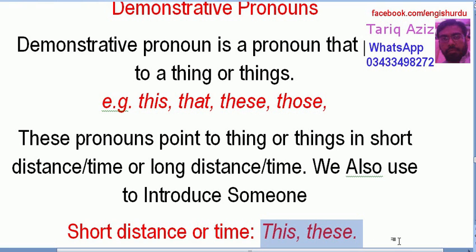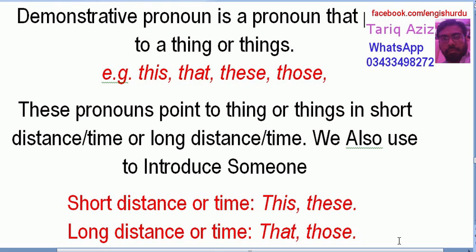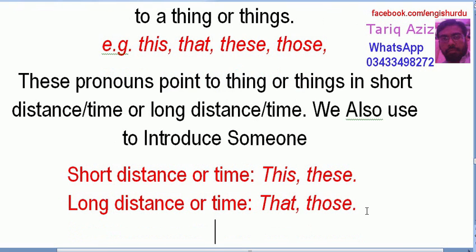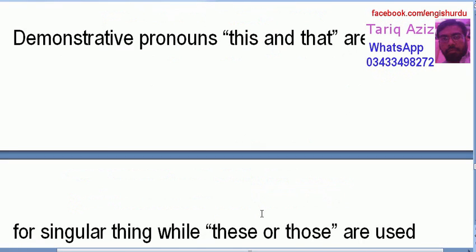Long distance یا long time کے لیے ہم that یا those کا استعمال کریں گے۔ This کا مطلب یہ، these کا مطلب بھی یہ، that کا مطلب وہ، اور those کا مطلب بھی وہ ہوتا ہے۔ اب ہم اس چیز کو سمجھیں گے۔